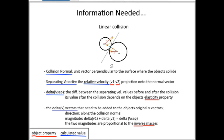I already used that before the collision response, because by the penetration resolution, the two objects were moving apart from each other along this normal. But I need to use it again, because I need the difference between the two objects' velocity vectors — the relative velocity — projected on this normal to get the separating velocity before the collision.